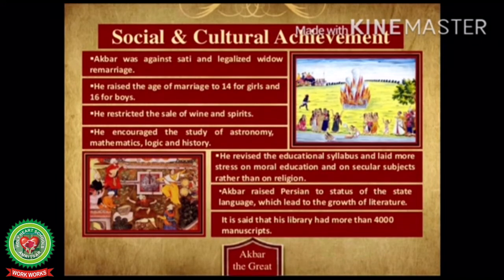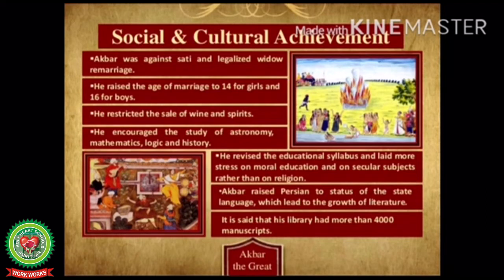Our next topic is Social Reforms by Akbar. Number one: Akbar was against sati and legalized widow remarriage. Number two: he raised the age of marriage to 14 for girls and 16 for boys. Number three: he restricted the sale of wine and spirits. Number four: he encouraged the study of astronomy, mathematics, logic, and history. Number five: he revised the educational syllabus and laid more stress on moral education and secular subjects rather than on religion. Number six: Akbar raised Persian to the status of the state language, which led to the growth of literature. His library had more than four thousand manuscripts — handwritten records.